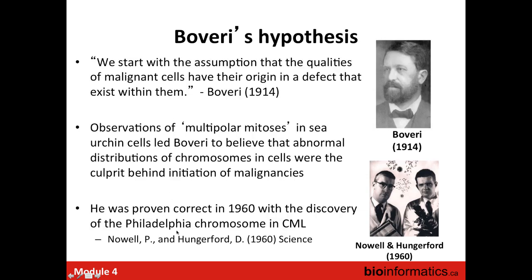The chromosome theory of inheritance is over 110 years old, independently proposed by two scientists, Sutton and Boveri. They identified chromosomes as the linear structures that carry the genetic material of a cell, which behave in a way concordant with Mendel's rules of inheritance. They're present in all dividing cells and pass from one generation to the next. Boveri was a biologist interested in cell organization whose work focused on embryonic development in sea urchins.